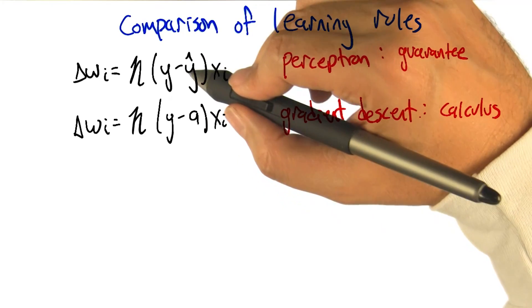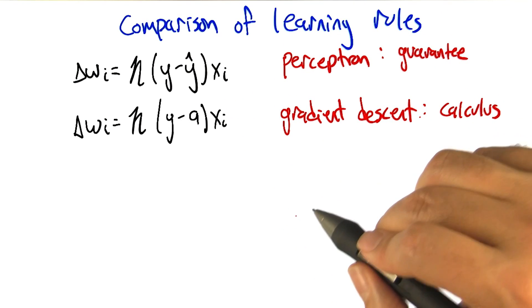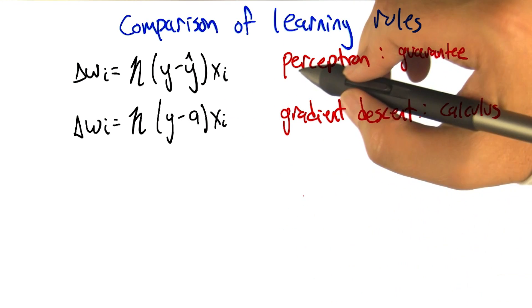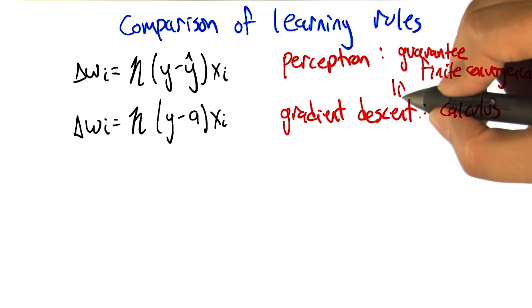So really it's the same thing except in one case we have done the thresholding, in the other case we have not done the thresholding. But we end up with two different algorithms with two different behaviors. The perceptron has this nice guarantee of finite convergence, which is a really good thing, but that's only in the case where we have linear separability.